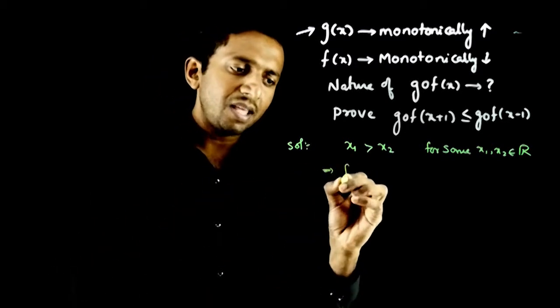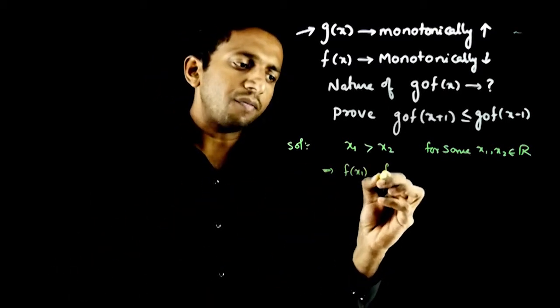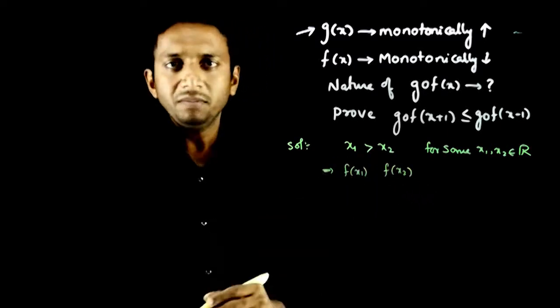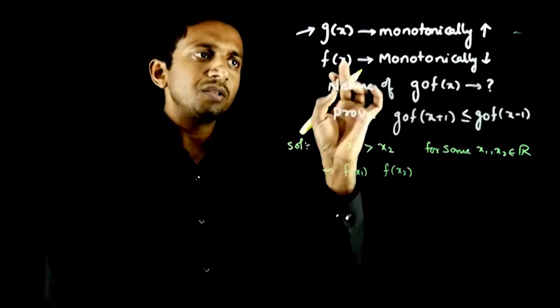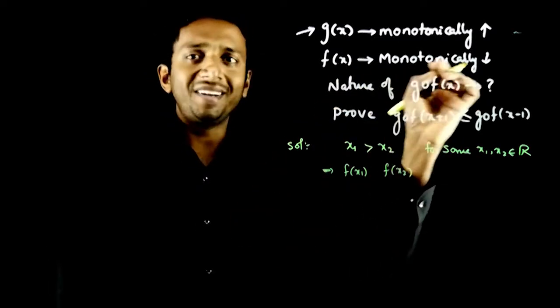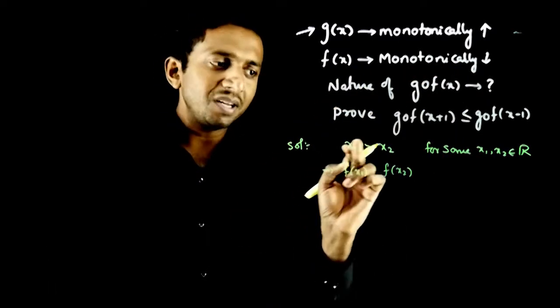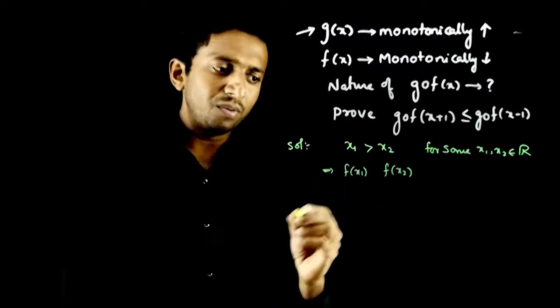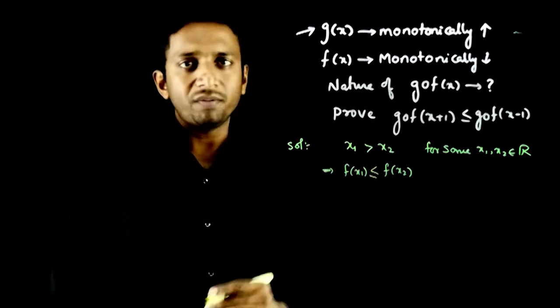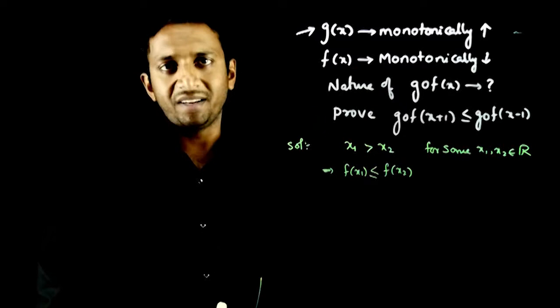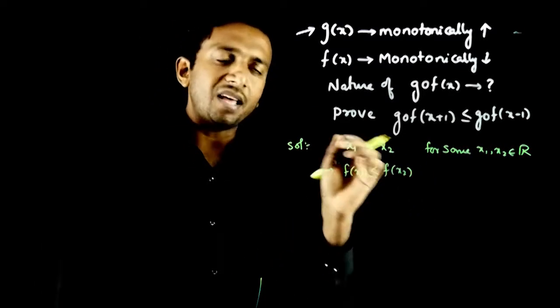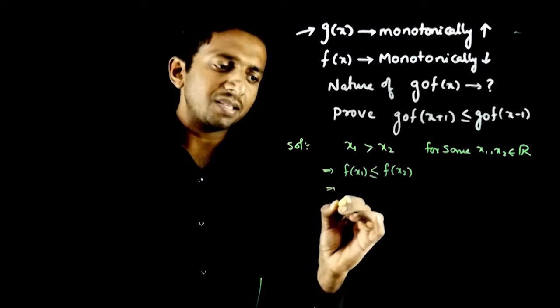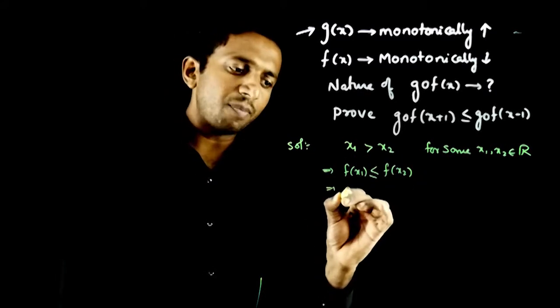Now this implies for f(x₁) and f(x₂), since you have given that f is monotonically decreasing, if x₁ is greater than x₂, then f(x₁) is less than f(x₂).